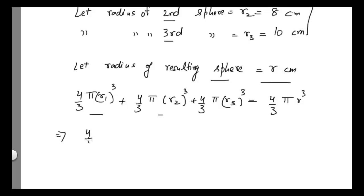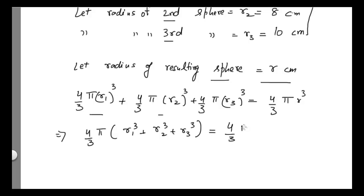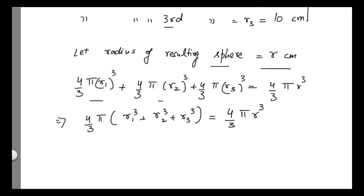From here, I can take 4/3 π common from the left-hand side, giving r1³ + r2³ + r3³ in brackets, equal to 4/3 π r³ on the right-hand side. Canceling 4/3 π from both sides, I get r1³ + r2³ + r3³ = r³.